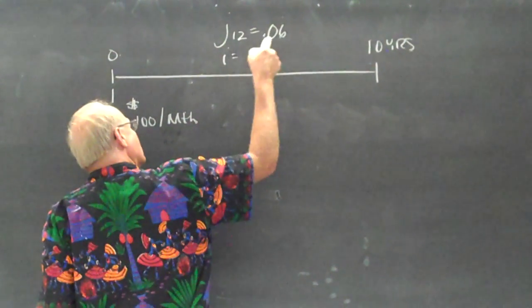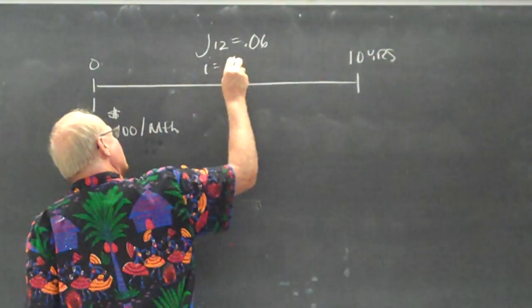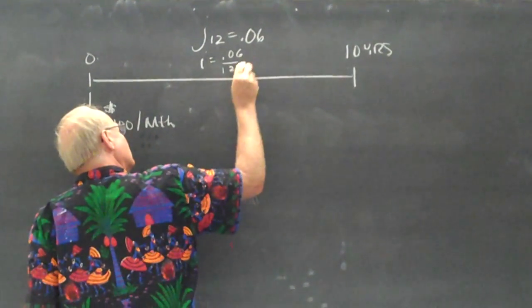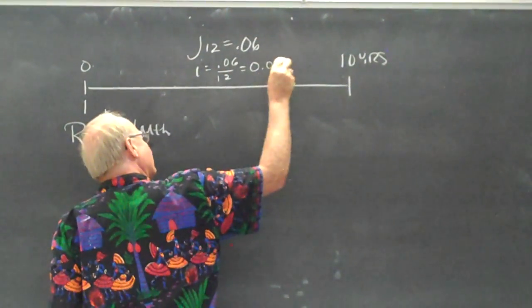So i is, remember, J divided by M. So 0.06 divided by 12, which is 0.005 per month.